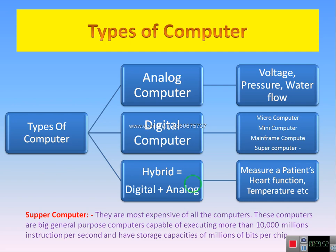Even if you look at a bike, you can see a meter — that is an analog type, a hybrid computer. Hybrid means digital plus analog mixed called hybrid computer. Analog computer is a machine — robotics machines are analog. Digital is a computer, laptop, mobile phone.